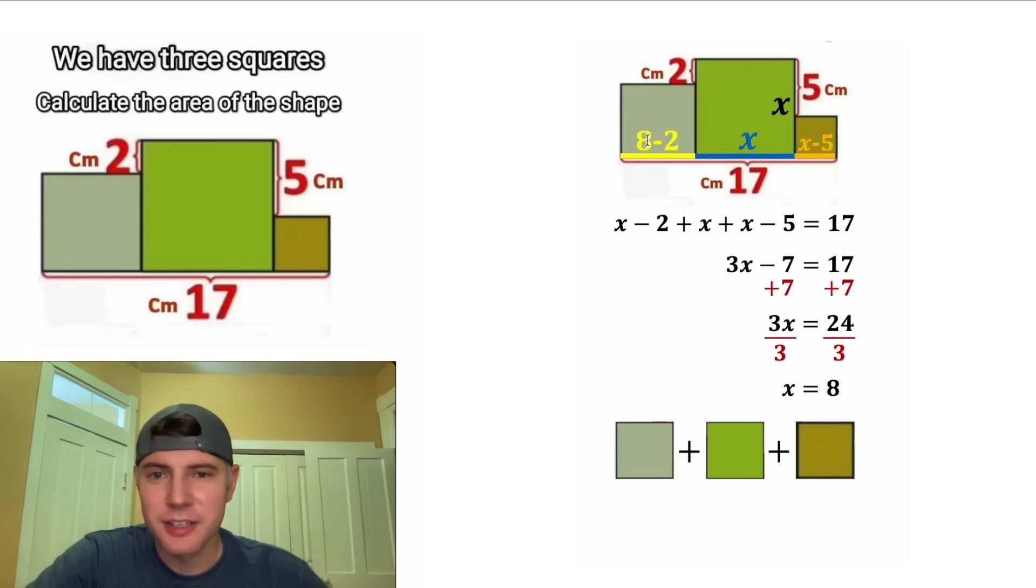Now we know this yellow x is equal to 8, this blue x is equal to 8, and this orange x is equal to 8. And we can simplify: 8 minus 2 is 6, and 8 minus 5 is 3. So the area of this gray square is 6 times 6, which is 36. The area of the green square is 8 times 8, which is 64. And the area of the brown square is 3 times 3, which is 9.